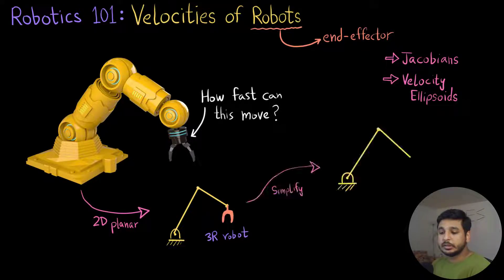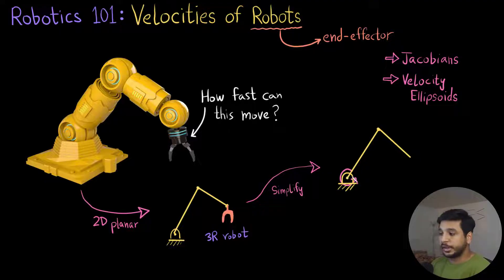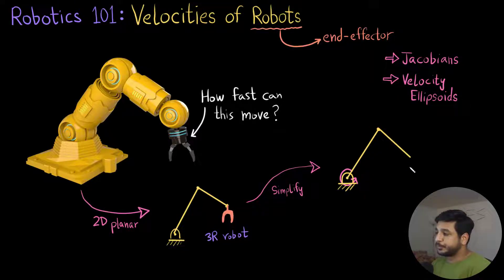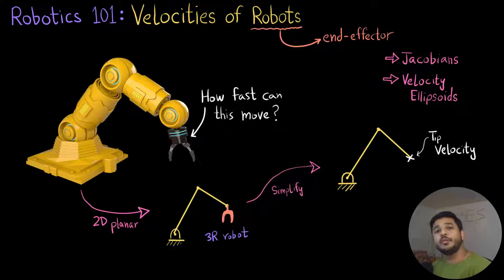Simplifying this problem further, I end up with this robot. It is now a 2R robot, which has got one revolute joint here that can rotate about this point, and another revolute joint here. At the end, I have gotten rid of the end effector. So now the question becomes: what would be the velocity of the tip of the robot, which I have marked here?